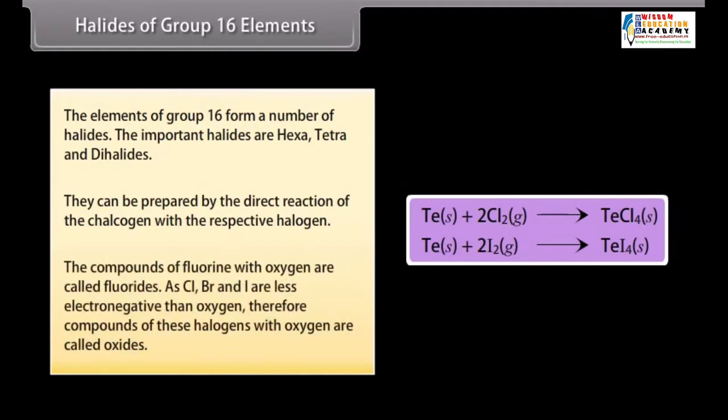The compounds of fluorine with oxygen are called fluorides. As chlorine, bromine and iodine are less electronegative than oxygen, therefore compounds of these halogens with oxygen are called oxides.